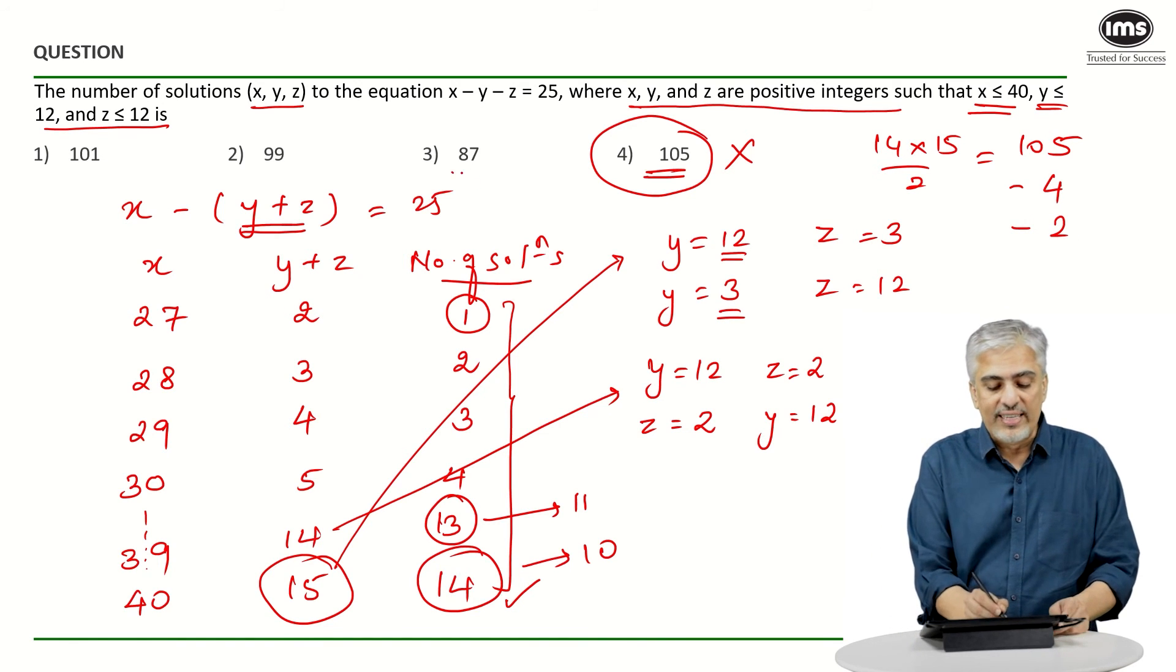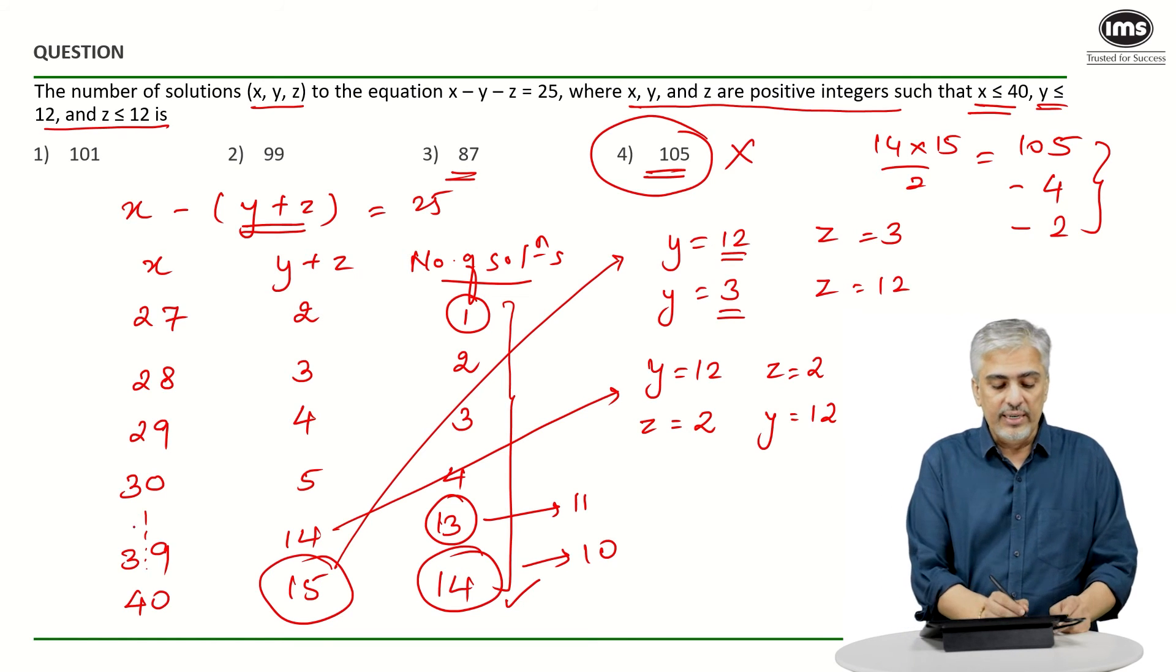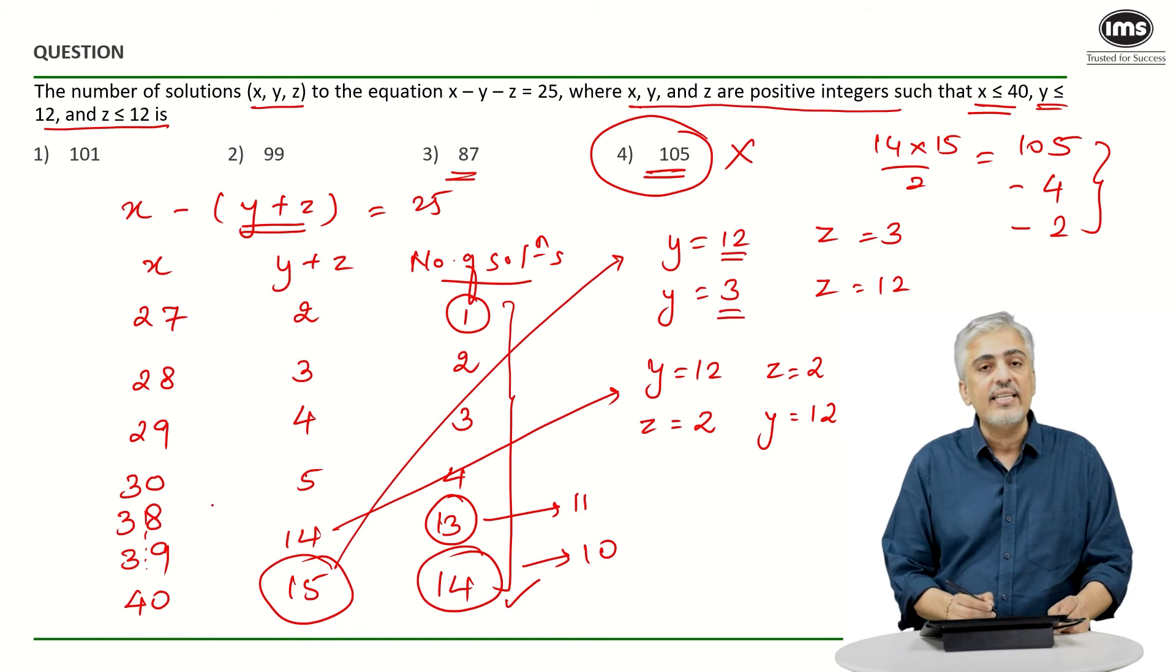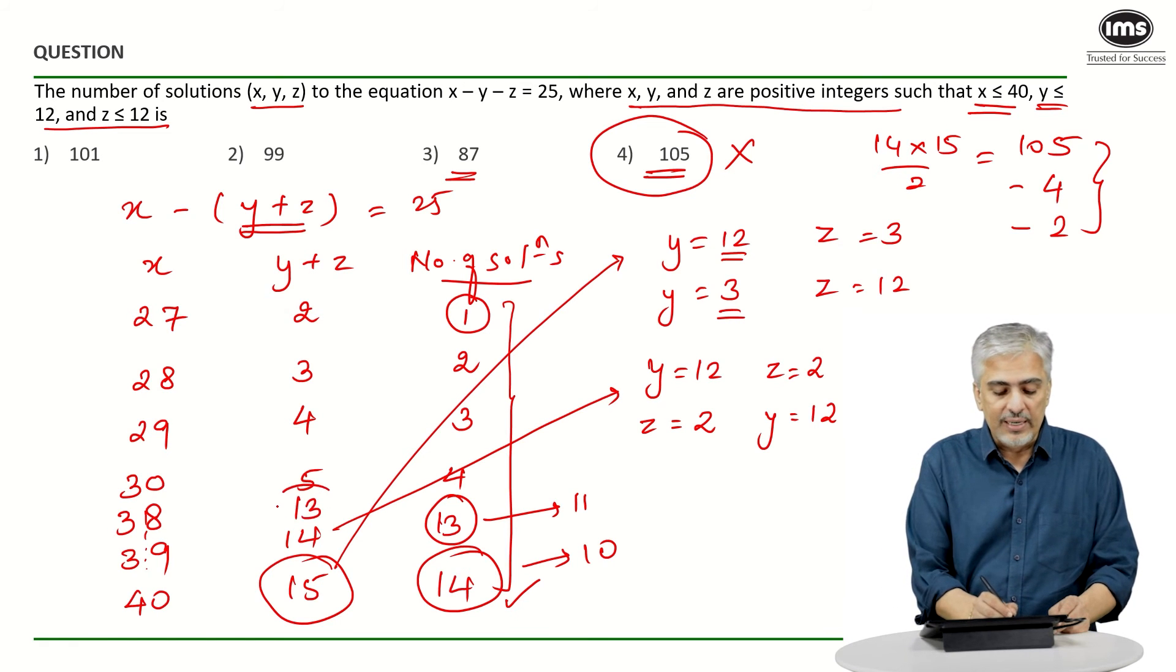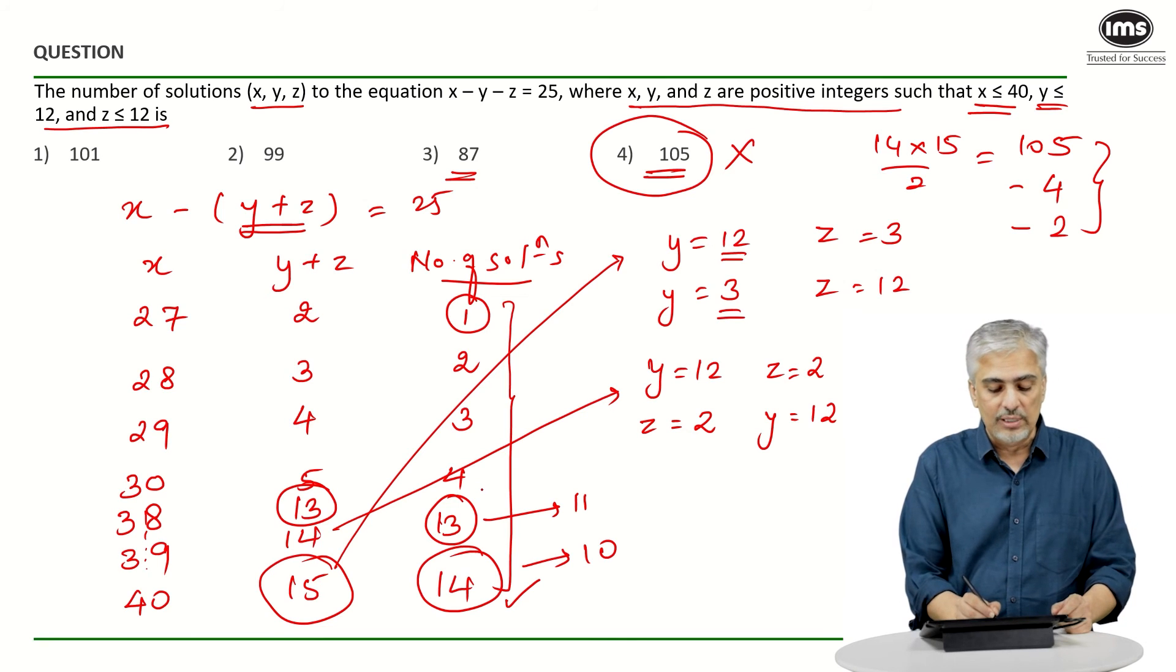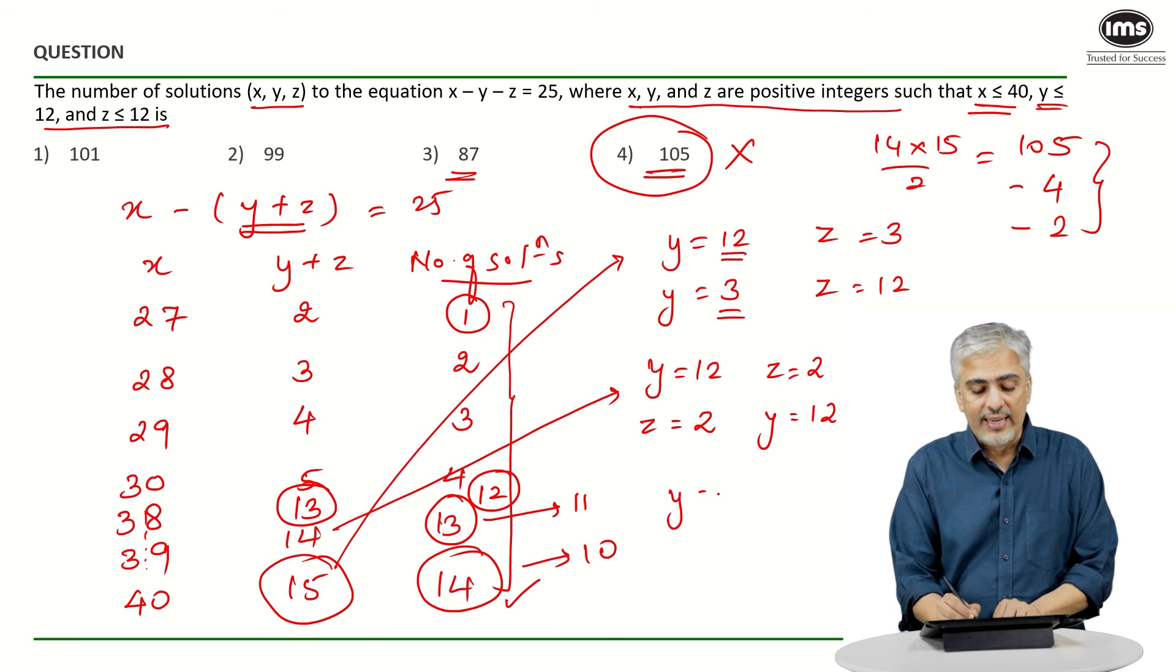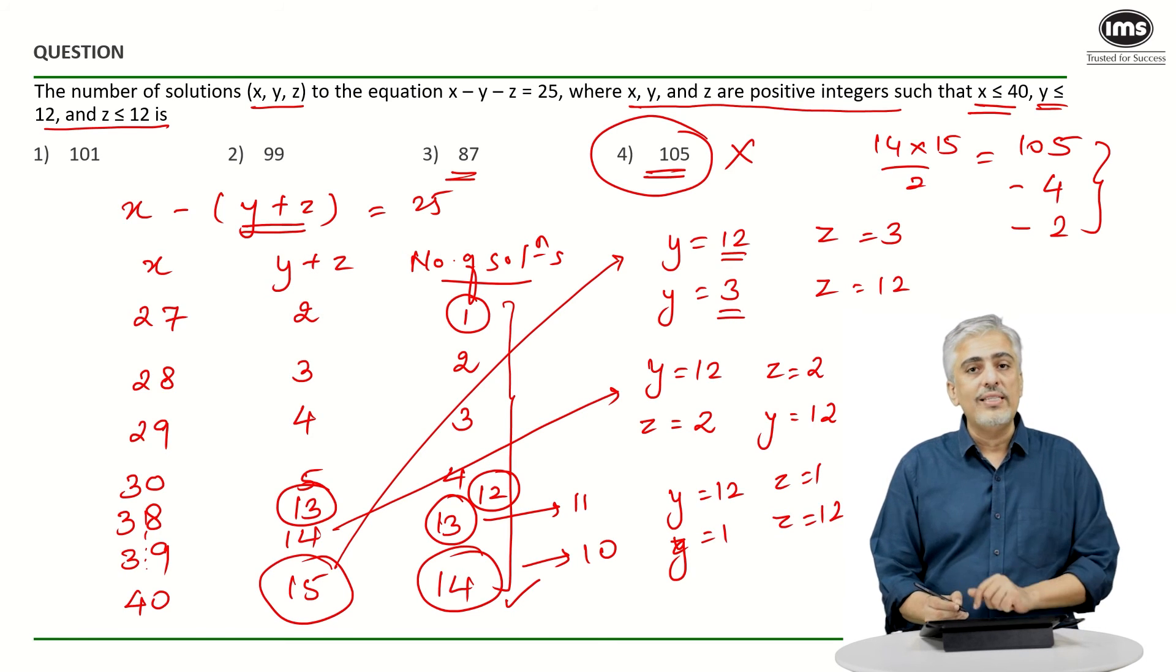So instead of 13 solutions, I have got 11 solutions. So I have again lost 2 solutions. Now in the options, there is an option of 87 also. I have already reached 99. I will have to check a little bit further. You can check for 38. When x is 38, y plus z will be 13. But now in this case, all the solutions which we had assumed - 12 solutions are possible - all 12 solutions are possible because y can go from 12 till 1 because z will be 1, and y can go from 1 to z 12. So all the 12 solutions are possible.